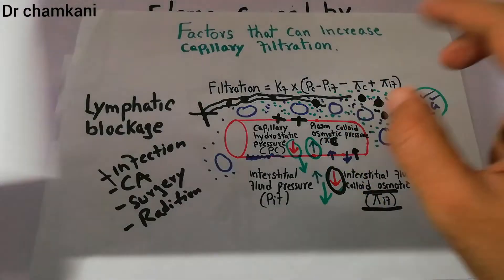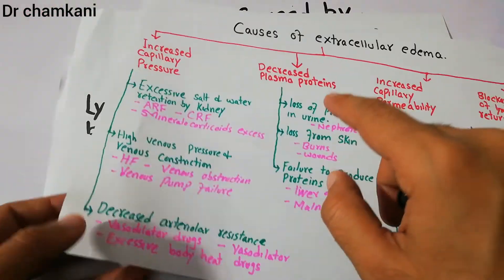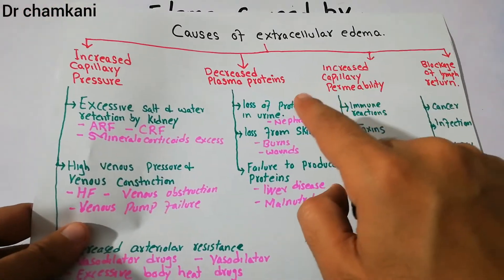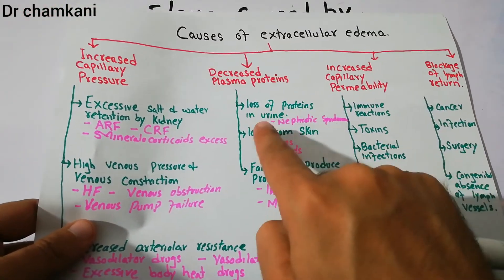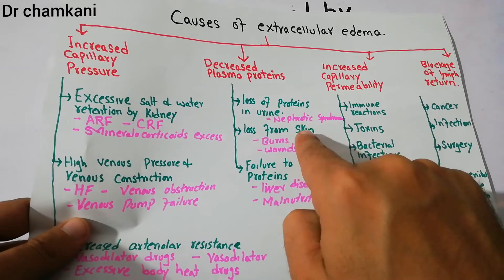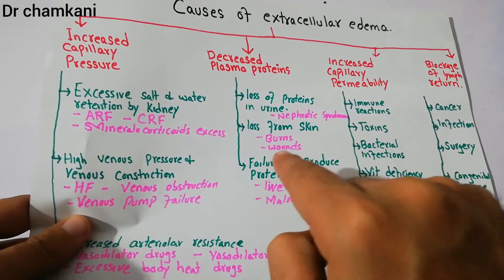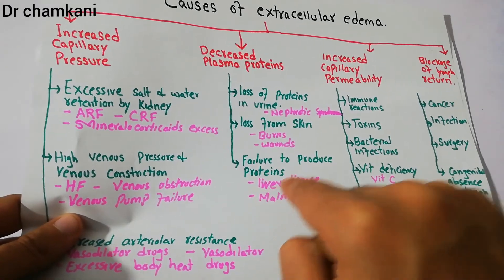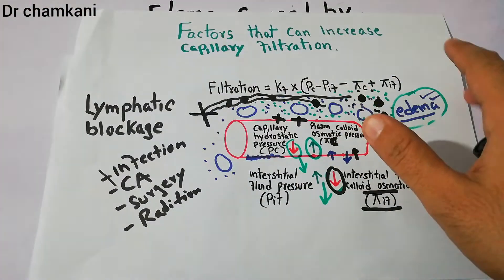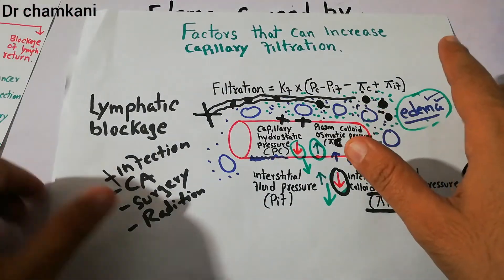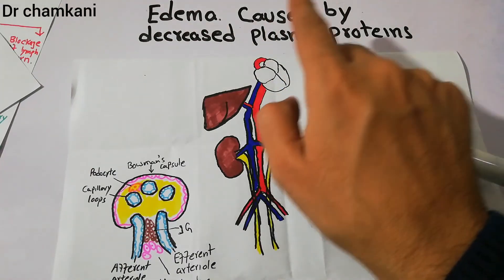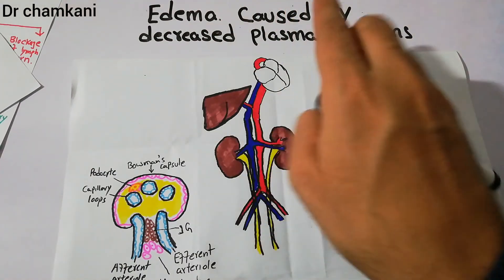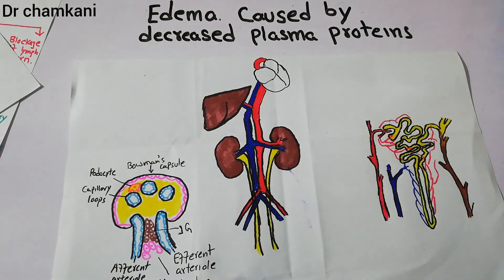The decreased plasma level of proteins is mostly due to loss of proteins in urine, loss of proteins from skin, and failure to produce proteins especially in liver diseases. That is all about edema caused by decreased plasma proteins.